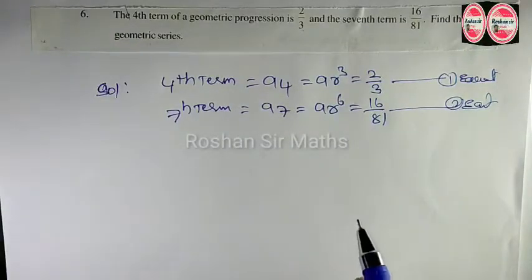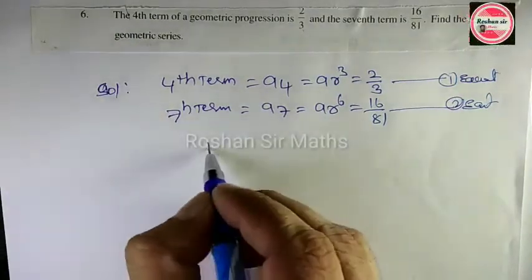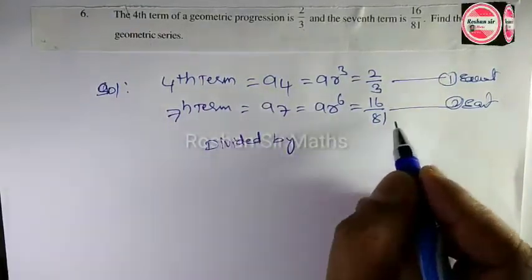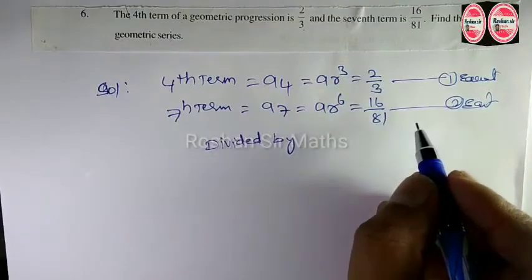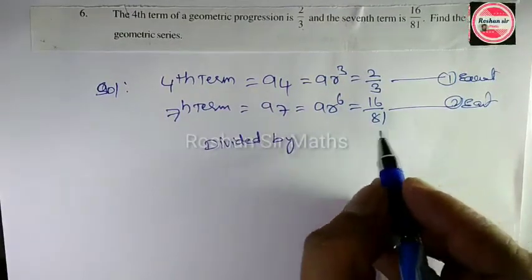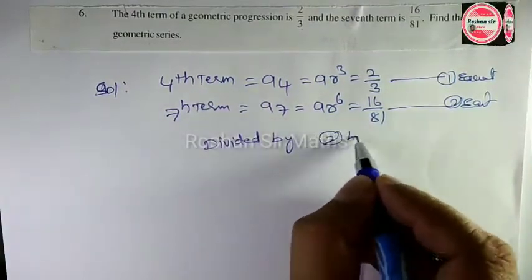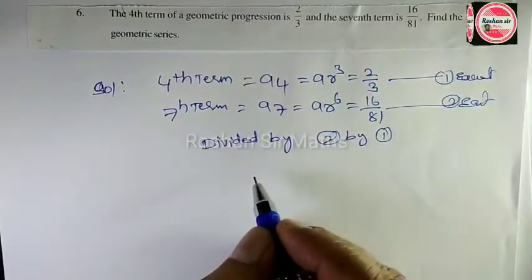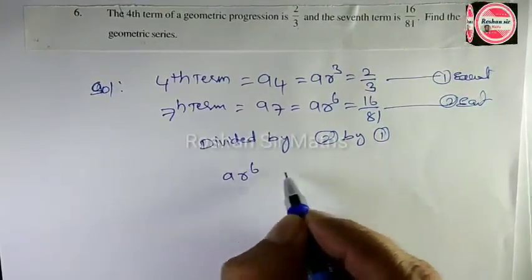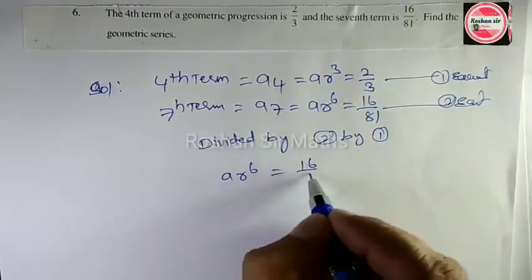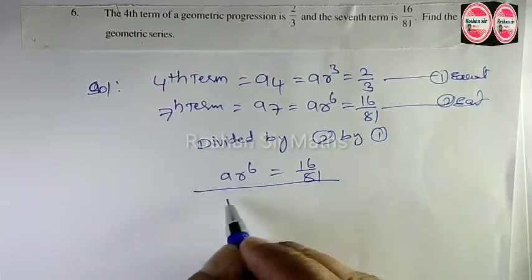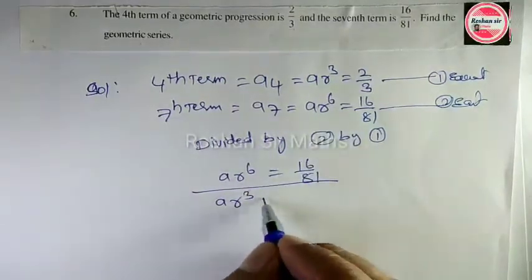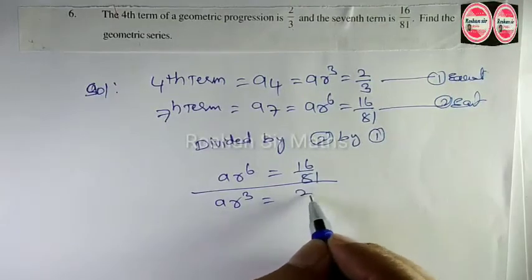Now we will divide equation 2 by equation 1. हम 2 को 1 से divide करेंगे. AR power of 6 is equal to 16 by 81, divided by AR power of 3 is equal to 2 by 3.